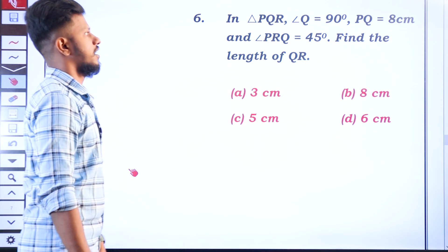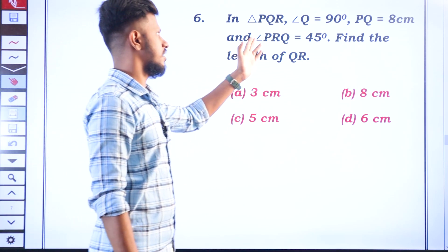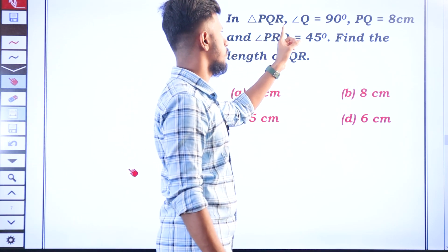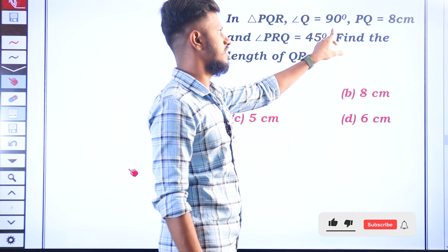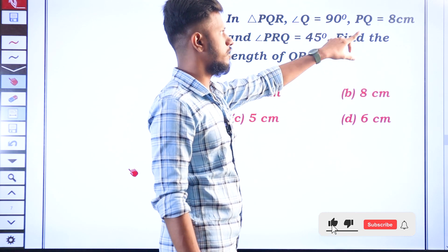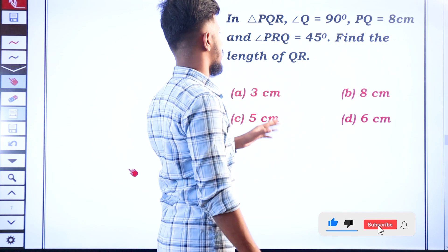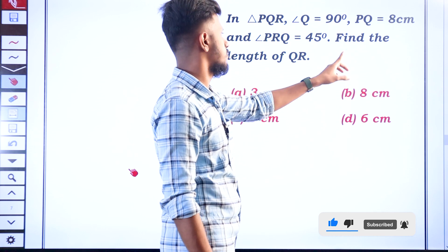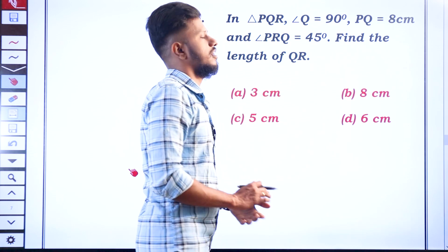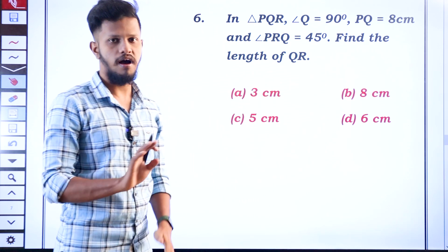First, this triangle is PQR. Angle Q is 90 degrees, PQ is 8cm and angle PRQ is 45 degrees. Find the length of QR.